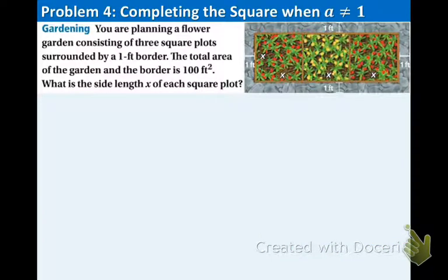So here is our real world application problem for all you gardening nature fans out there. Here's our example. You are planning a flower garden consisting of 3 square plots surrounded by a 1 foot border. The total area of this garden and the border is 100 feet squared. What is the side length x of each square plot? So take a moment and just look at the picture. The first thing we need to do is write out the dimensions. We know that the total area is 100 feet squared. That's important.